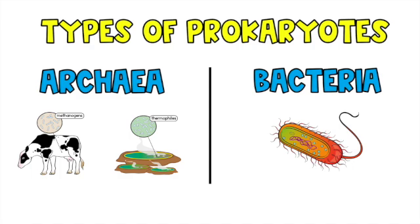Good bacteria is also found in a lot of the foods we eat, like yogurt and milk. But then there's also bad bacteria — the type that can get us sick. We have these single-celled organisms all inside our body, good and bad, and bacteria are the smallest cells on Earth.